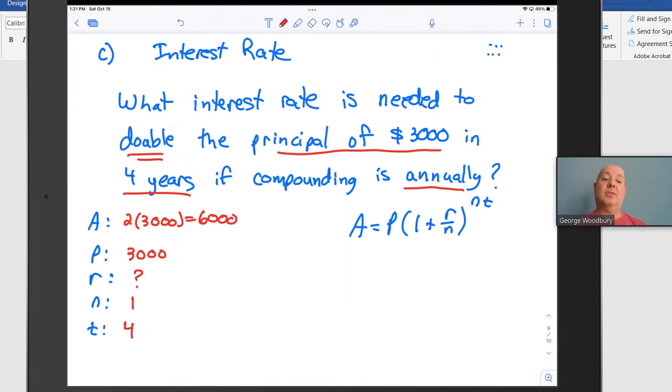So now I've got them all filled out except for r. I can go to the formula and put in: 6,000 equals 3,000 times 1 plus r over 1 to the nt power, 1 times 4. First,